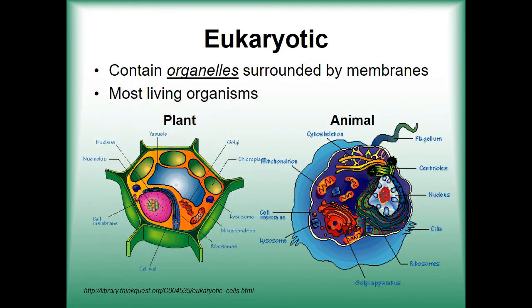It is noticeable how less complex prokaryotic cells are compared to eukaryotic cells, as they have fewer internal structures. These types of cells are found in all one-celled organisms and some types of bacteria. On the other hand, eukaryotic cells have a higher level of complexity and are capable of more intricate processes, which is why most living organisms have evolved to have them.